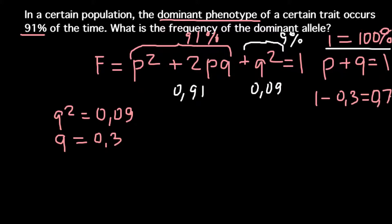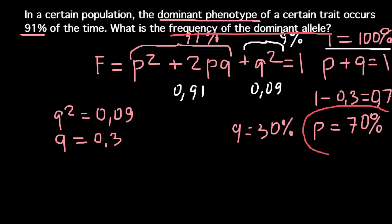We can say that the occurrence of p would equal 70%. So q would equal 30% and p would equal 70%. Once again, our question: what is the frequency of the dominant allele? And here is our answer.